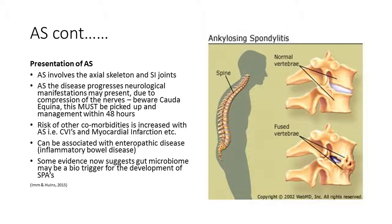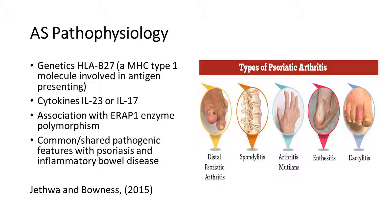As well as genetic susceptibility, the gut microbiome may be an environmental bio-trigger that combines with genetics to produce the clinical disease process. The pathophysiology involves HLA-B27 association and involvement of major histocompatibility complex type 1 molecules in antigen presentation and autoimmunity. Cytokines IL-23 and IL-17 drive the inflammation. There is also association with the ERAP1 enzyme polymorphism linked to antigen presentation, and the pathophysiology shares common features with psoriasis and inflammatory bowel disease.